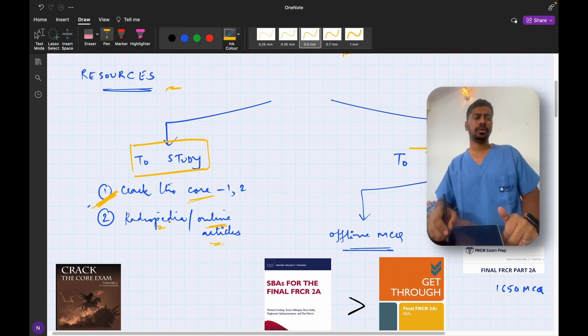The other resources are going to be Radiopedia and online articles from Radiographics or AJR, because Crack the Core, even though it's an amazing book, does not contain all that is required for the FRCR exam. Therefore you might need to read few articles and Radiopedia pages to get the additional information which you can add onto your notes or onto your Crack the Core book to make it more complete.